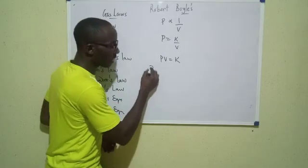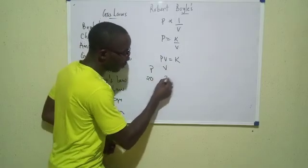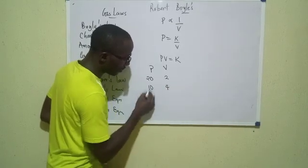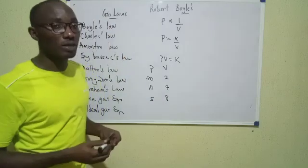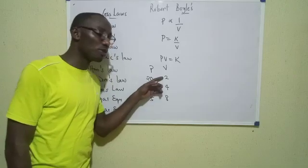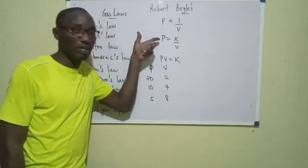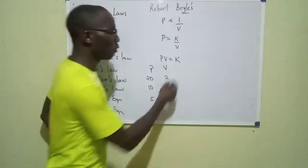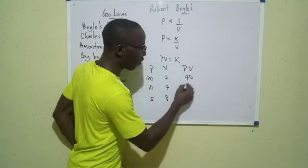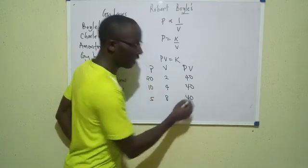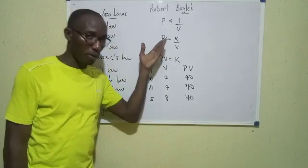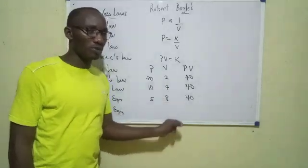For example, at a particular time pressure is 20 and volume is 2; later pressure becomes 10 and volume becomes 4; later still, pressure is 5 and volume is 8. Notice that pressure is going down while volume is increasing — inverse proportionality. But the product PV: 20 times 2 is 40, 10 times 4 is 40, 5 times 8 is 40. So as pressure goes down, volume goes up, but their product remains constant. That's Boyle's Law.